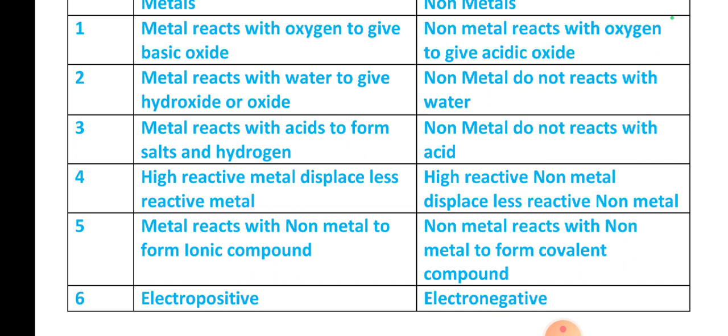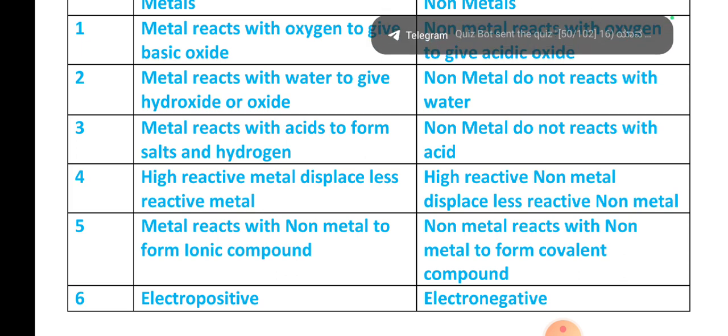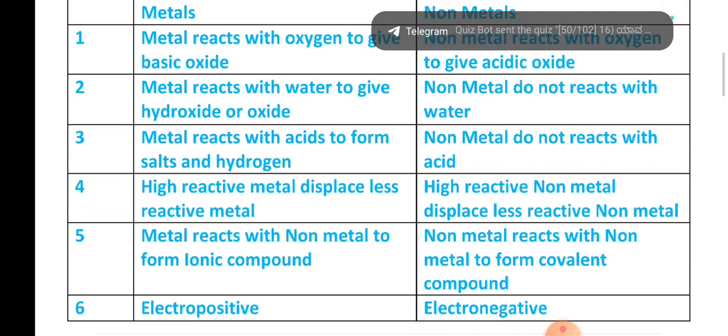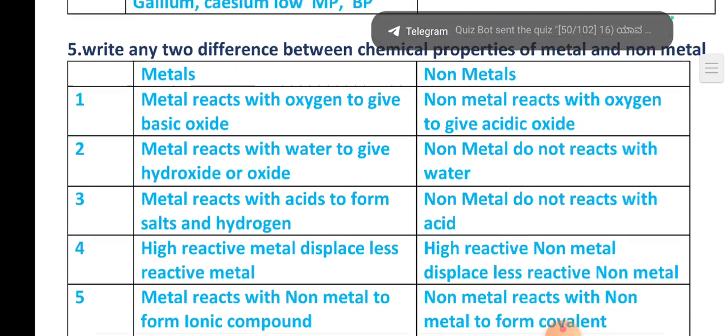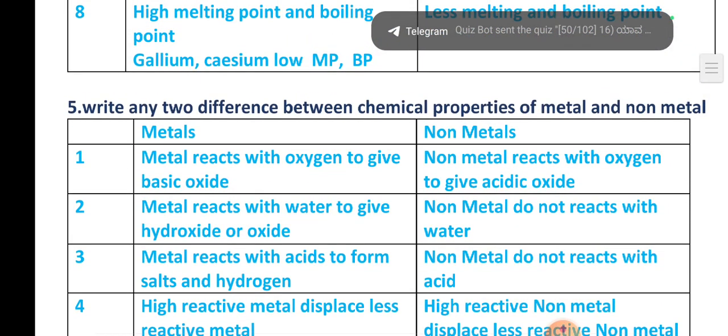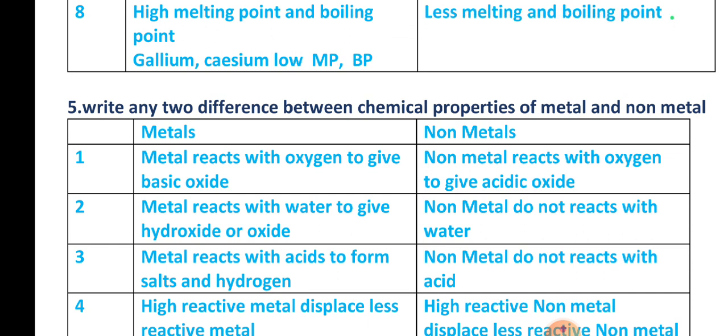Metals react with non-metals to form ionic compounds. Non-metals react with non-metals to form covalent compounds — this is very important. Metals are electropositive and non-metals are electronegative. These are the basic differences in chemical properties between metals and non-metals.